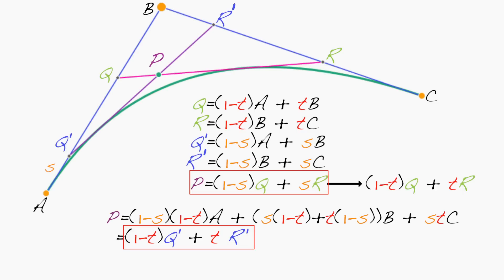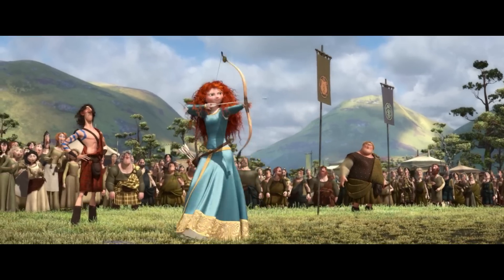Well, this expression says that p is somewhere on the line segment q prime r prime. And this expression says that p is somewhere on the line segment qr. And the only point that can be on both line segments is the intersection point. So our proof is complete. Bullseye!